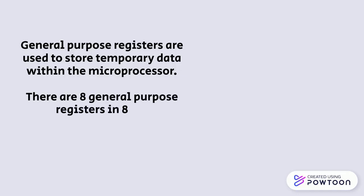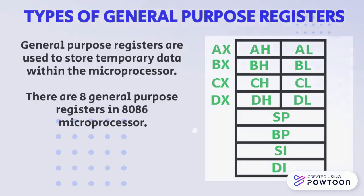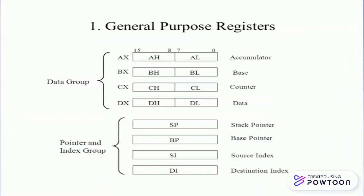They are AX, BX, CX, DX, SP, BP, SI and DI. The first four registers belong to the data group and the following four belong to the pointer and index group.